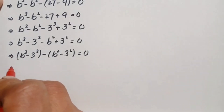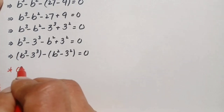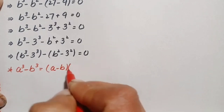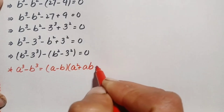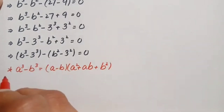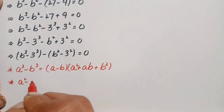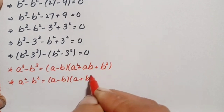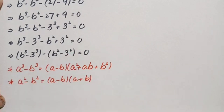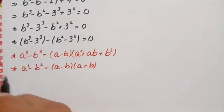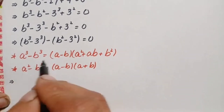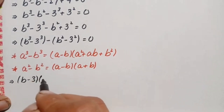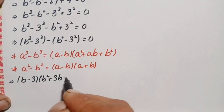The cubic identity is: a cubed minus b cubed equals (a minus b)(a squared plus ab plus b squared). The square identity is: a squared minus b squared equals (a minus b)(a plus b). Applying the cubic identity with a = b and b = 3 gives: (b minus 3)(b squared plus 3b plus 3 squared).